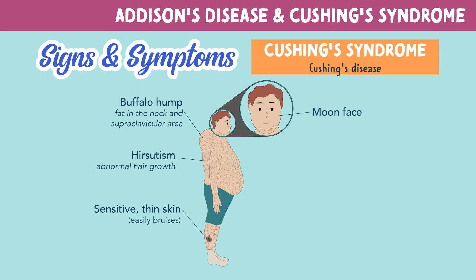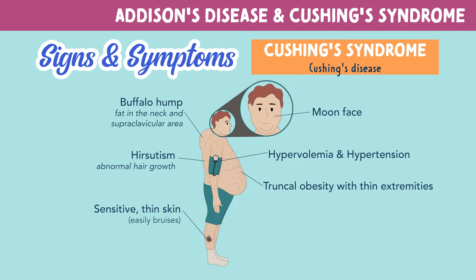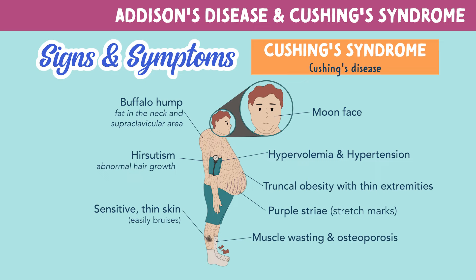Hypervolemia and hypertension, truncal obesity with thin extremities, purple striae or stretch marks, muscle wasting, and osteoporosis.